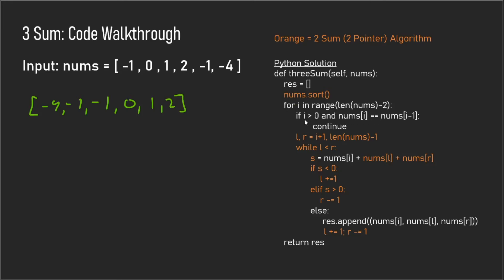We have an if statement that checks if i is greater than zero and nums[i] equals nums[i - 1], and if so we continue. This if statement skips over duplicates — since we have two negative ones, we don't want unnecessary computation, so we continue when we see two of the same numbers next to each other.